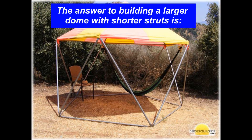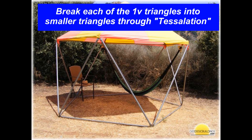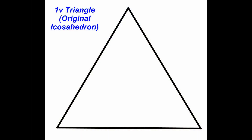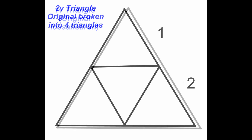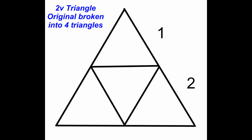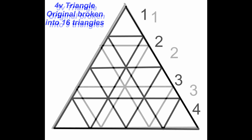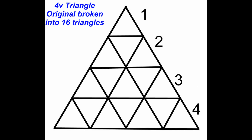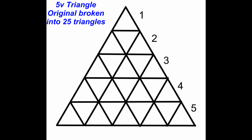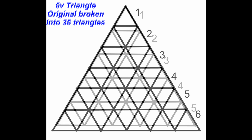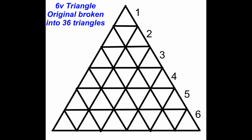The answer to building a larger dome with shorter struts is to break each of the 1V triangles into smaller triangles through tessellation. Each tessellation of the original 1V triangle increases the dome frequency to the next frequency, lets you build a larger dome with shorter struts, and makes the dome more spherical.